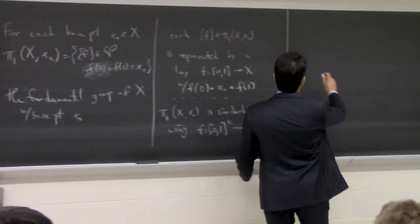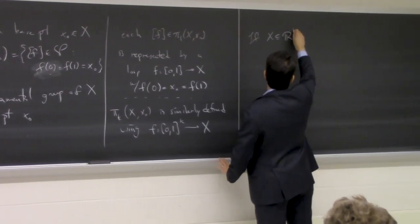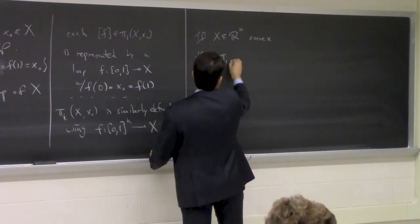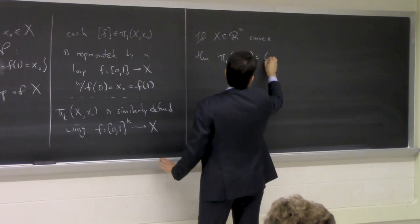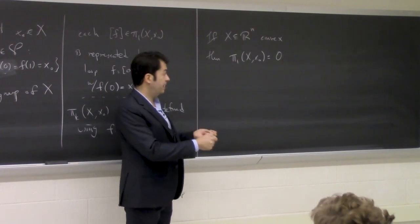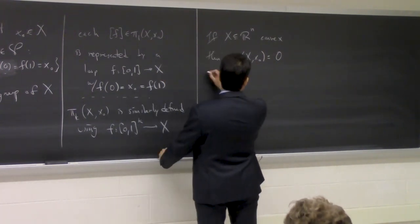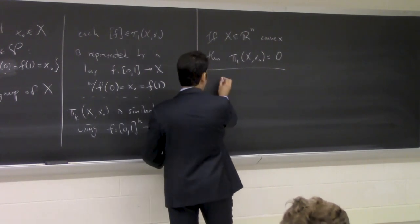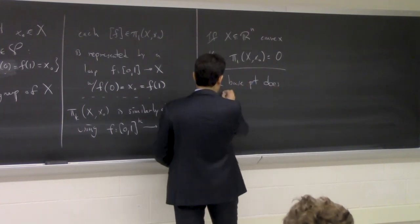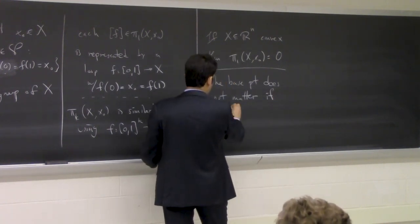We have one example so far: if x is a convex subset of Euclidean space, then π₁ of x, x₀ is 0 — meaning it's the trivial group, a group with a single element represented by the constant loop based at x₀. And one property we proved is that the base point doesn't matter if your space is path connected.